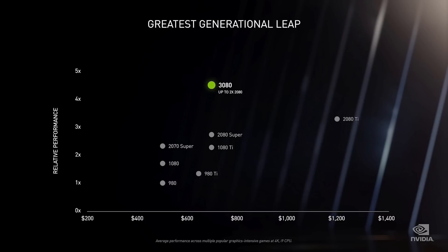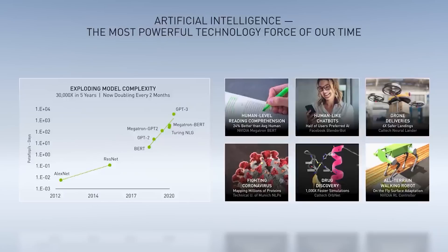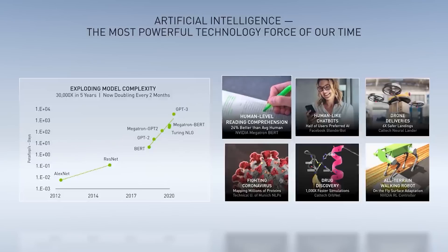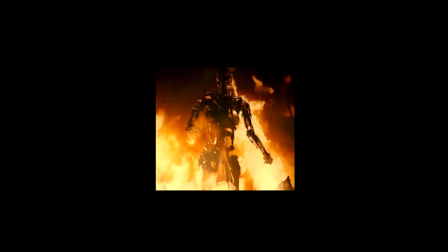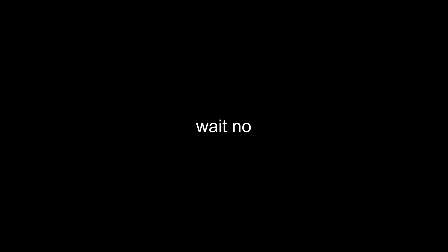Just look at this graph: the price dropped by at least half and still retains the same functionality as the RTX 2080. On the other hand, we are seeing double the amount of AI model complexity with this GPU release, and alongside that, the rise of better AI is going to be even quicker.